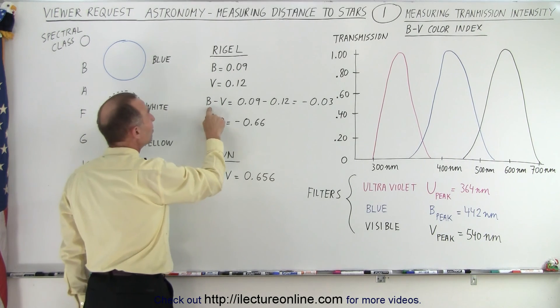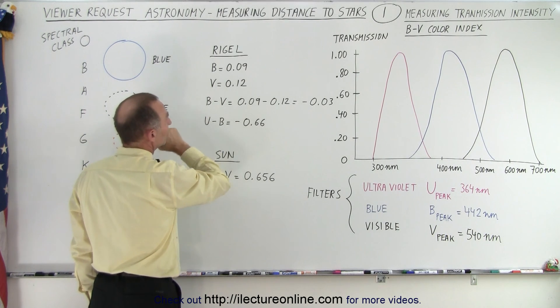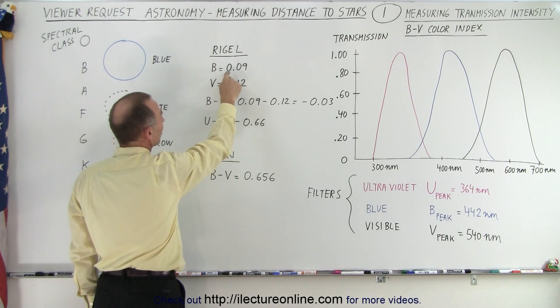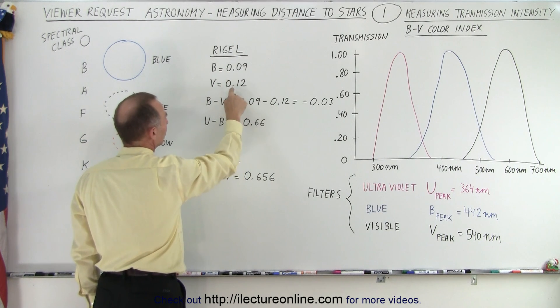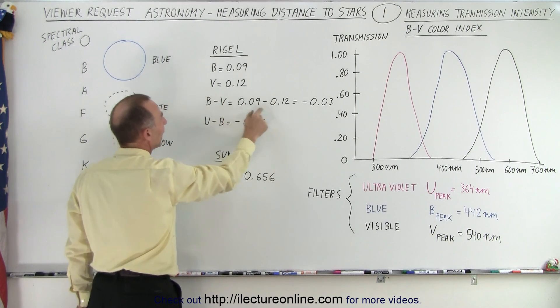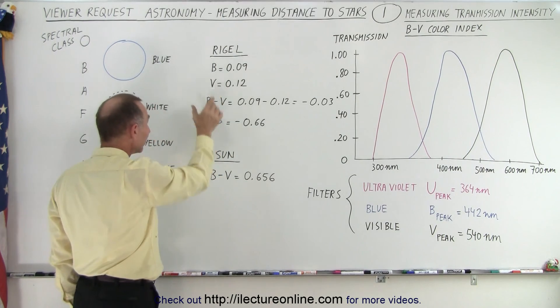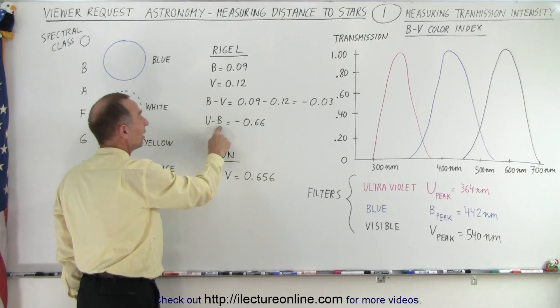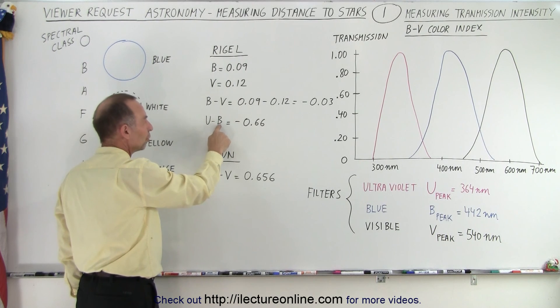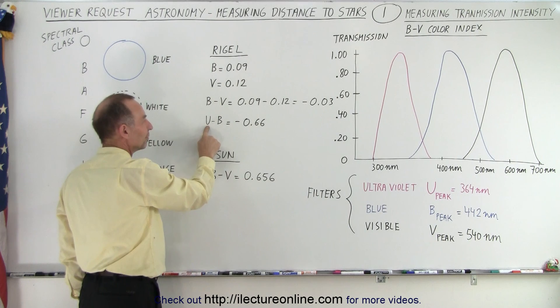So for example, the BV index, as we call it, BV color index, or the B minus V color index - we take the transmission percentage of the blue filter, subtract from that the transmission index of the visible filter, and the difference is minus 0.03. For Rigel, the U minus B reading is minus 0.66, which means that the transmission through the blue is much greater than the transmission through the ultraviolet.